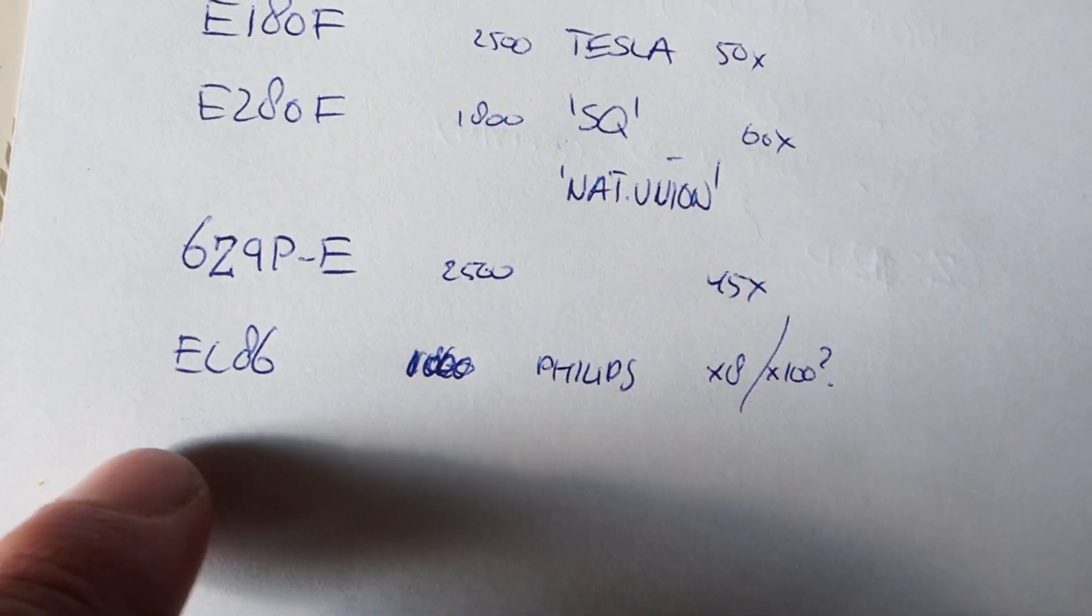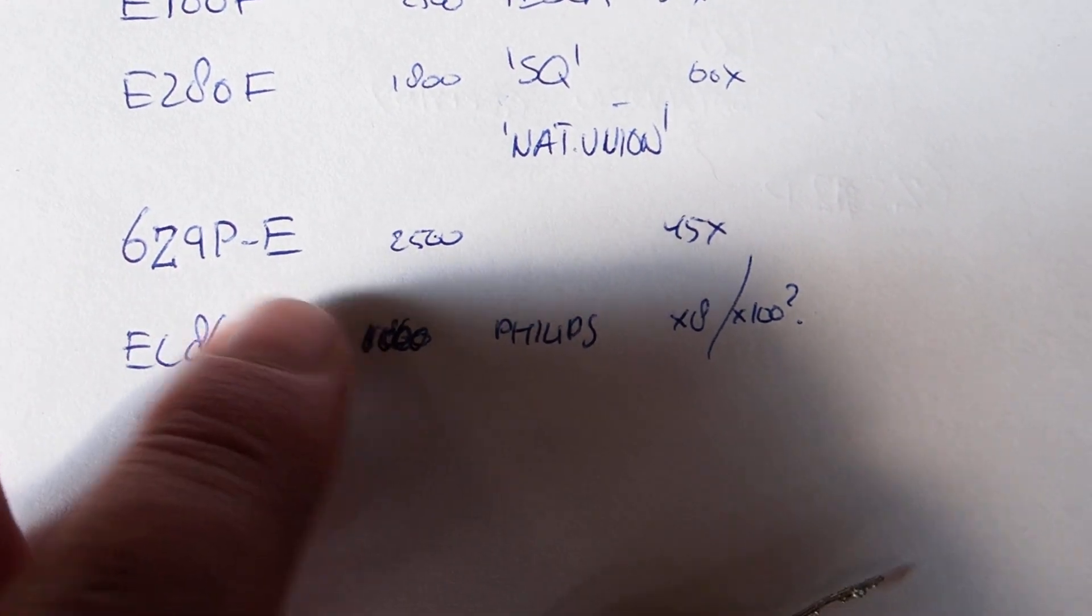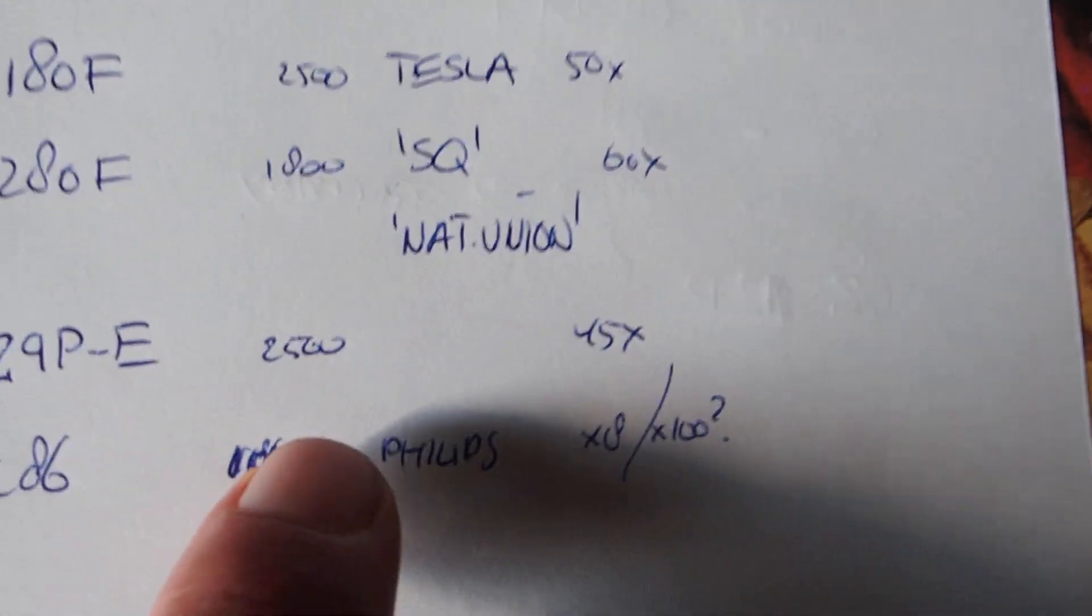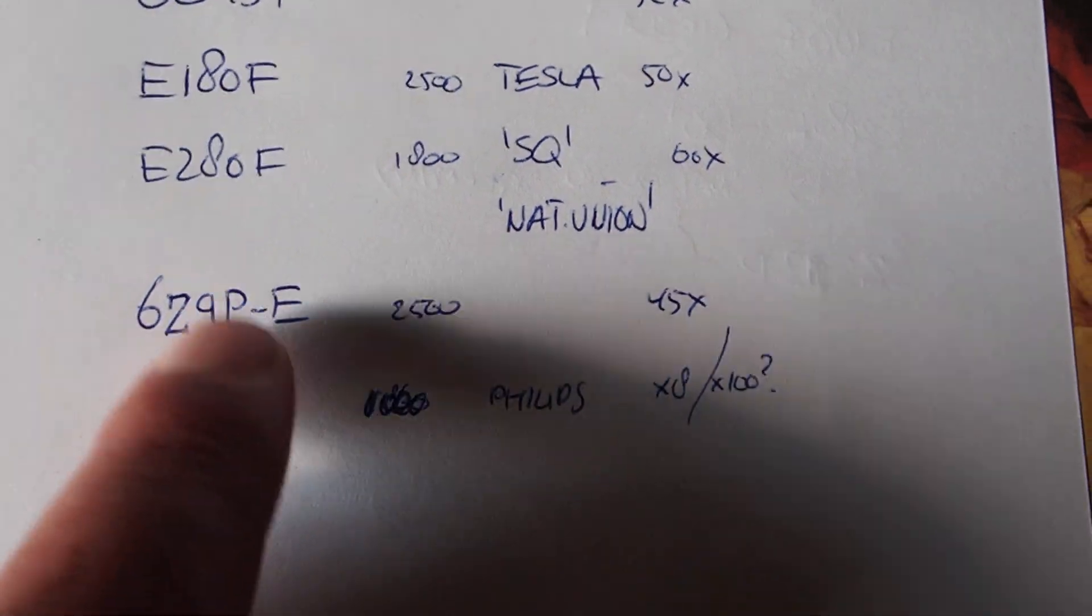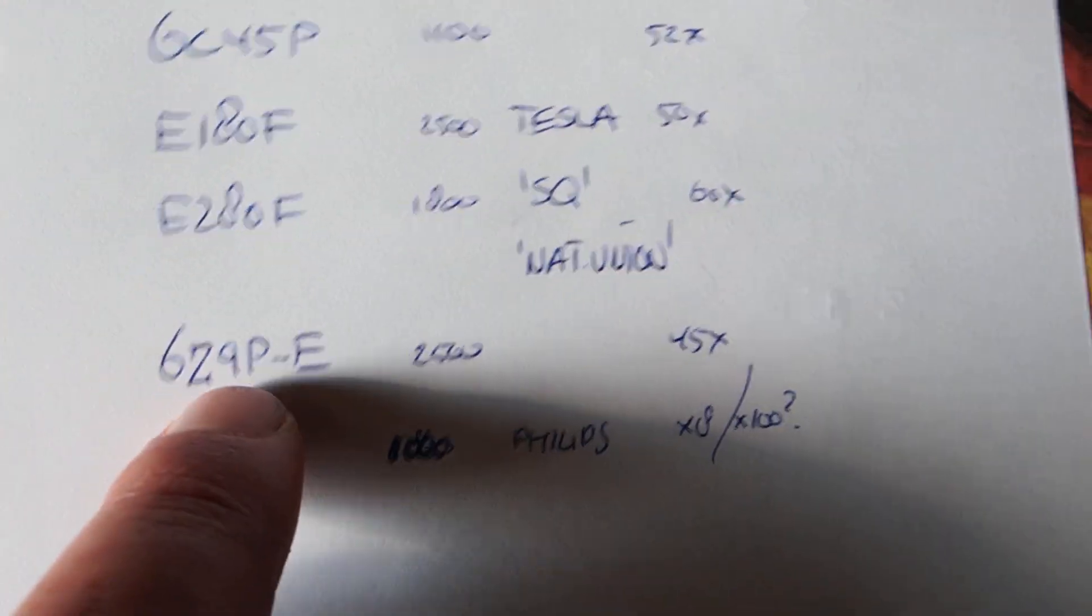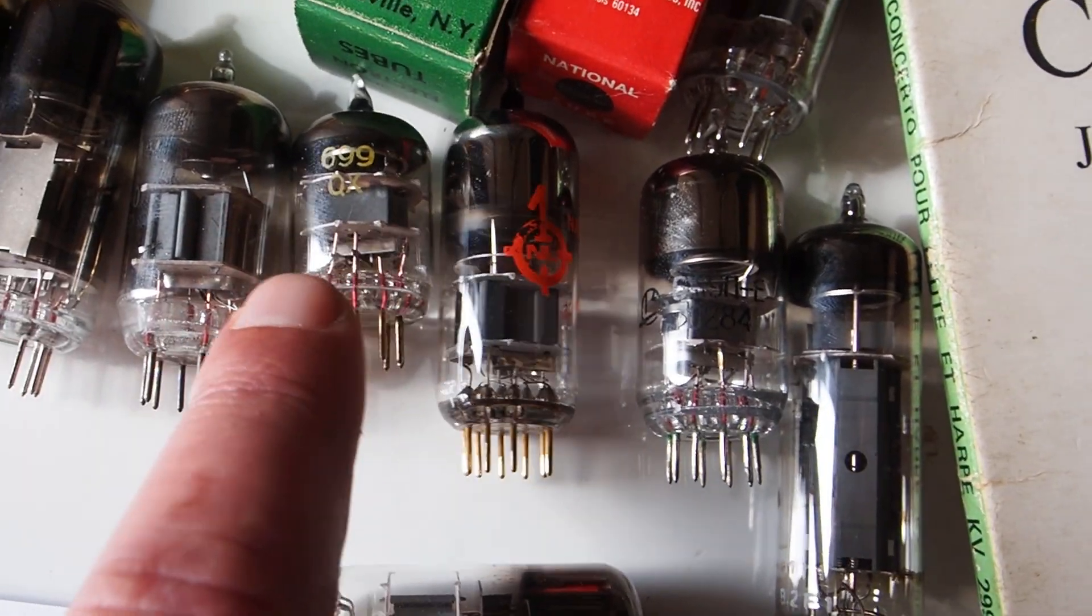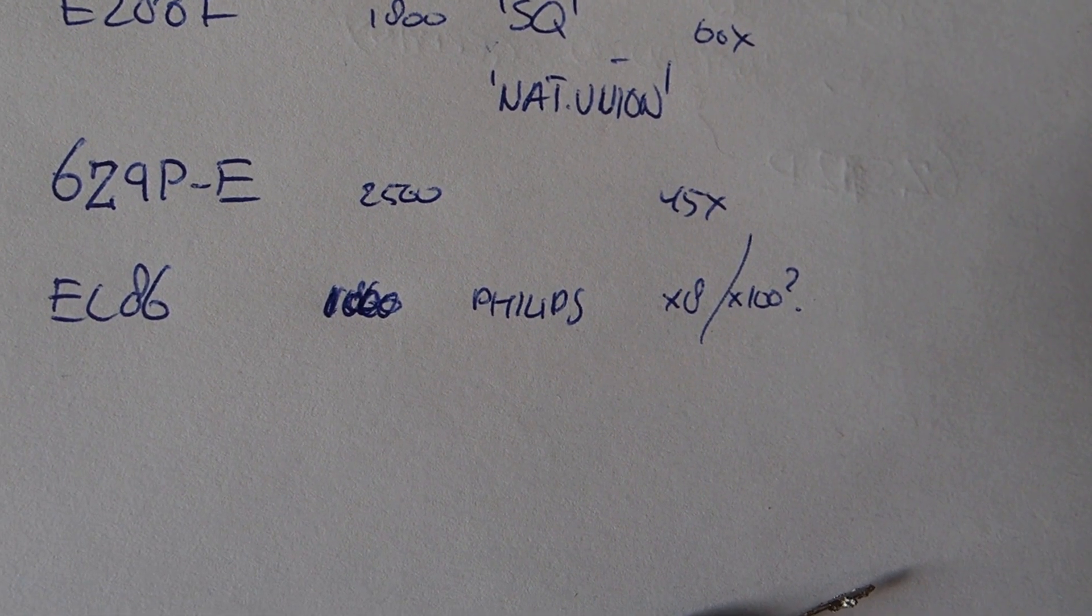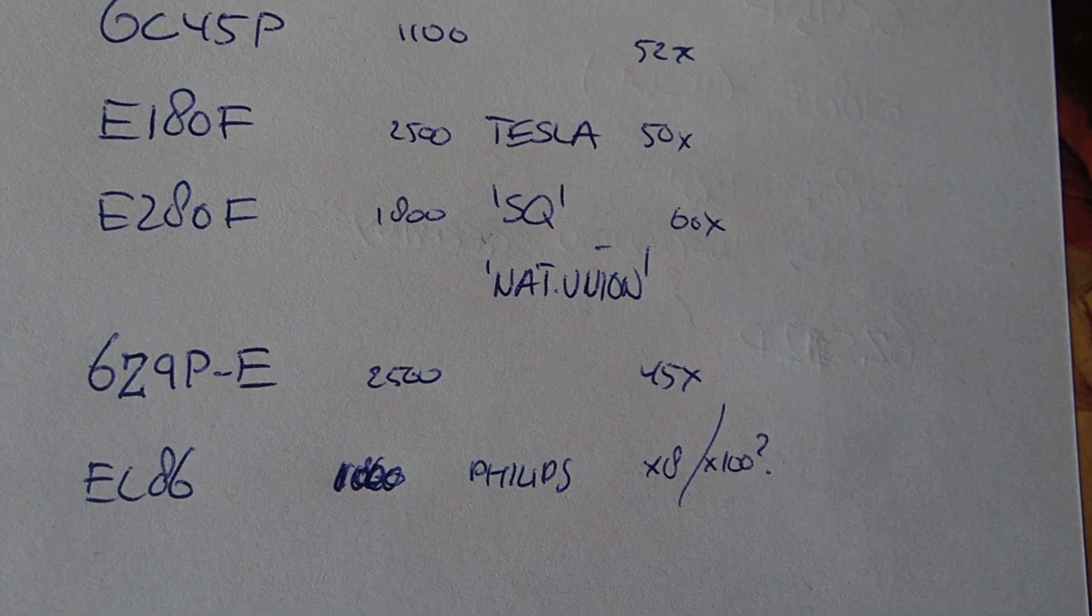All right, then we move over to the Soviet variety of the E180F, which is the 6C9PE. Very similar, a little bit less gain than the E180F officially. Plate resistance is I think very similar as well. It seemed to handle more current a bit better. I think it's a bit more robust actually, built. It's also a slightly larger tube if you look. This tube is slightly larger than the tiny E180F.